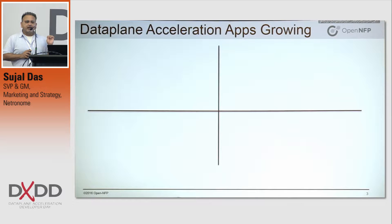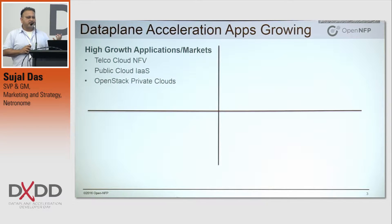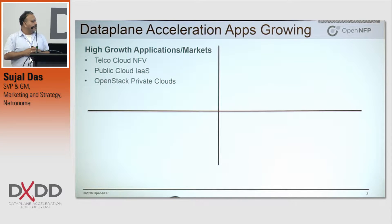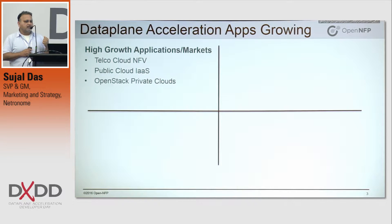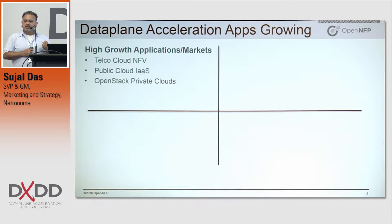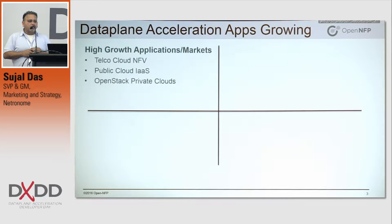Why is OpenNFP important? This is an initiative that started last year, and Neil talked about some of this. I have more specifics on markets and applications. We see data plane acceleration being applicable to three prime, very high-growing markets: firstly, the telco cloud NFV market, driving new services for mobile data, 4G, 5G, and IoT networks; secondly, public cloud infrastructure as a service; and finally, the revolution with OpenStack, where many private clouds are being deployed. In each of the three segments, we see the need for data plane acceleration.